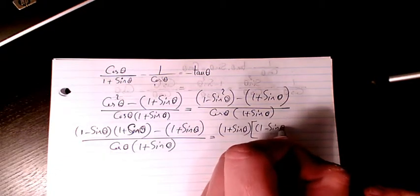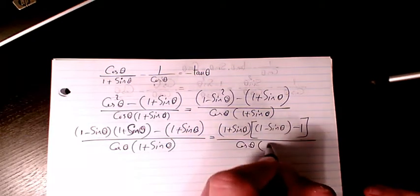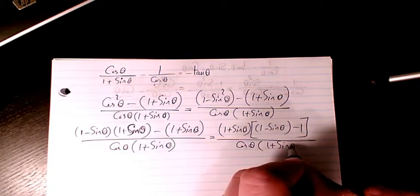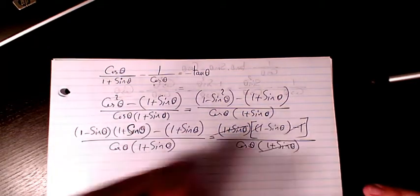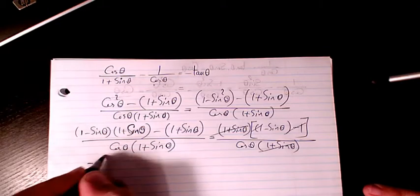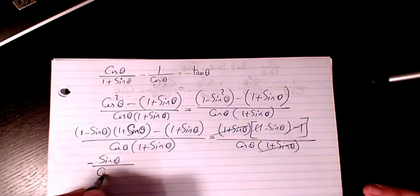Divided by cosine theta times 1 plus sine theta. Then these two cancel out—1 and negative 1 cancel out—and it will remain only negative sine theta as you see here, divided by cosine theta.